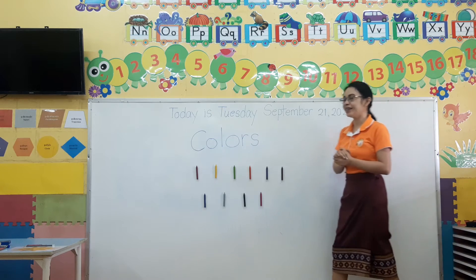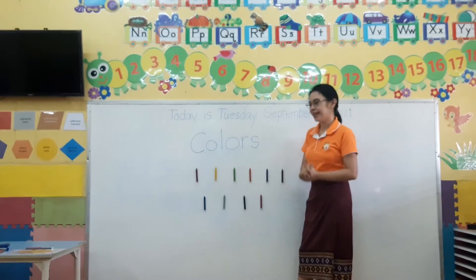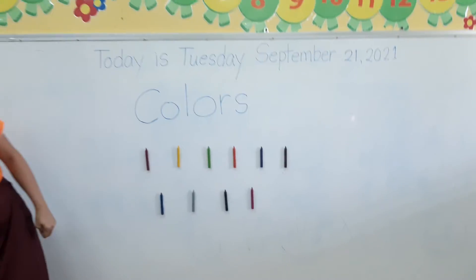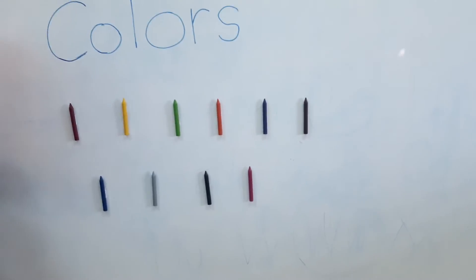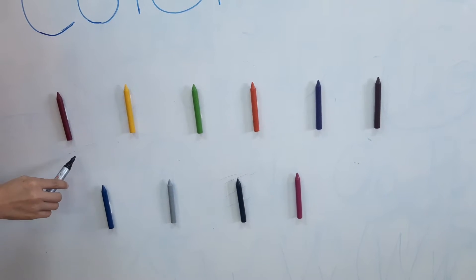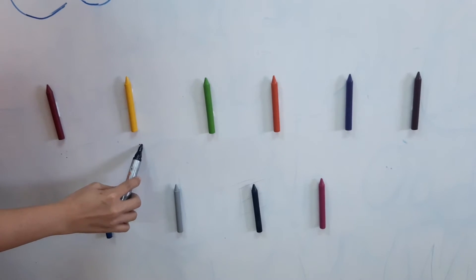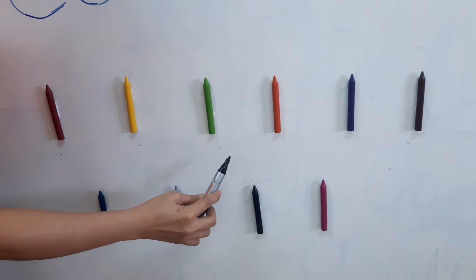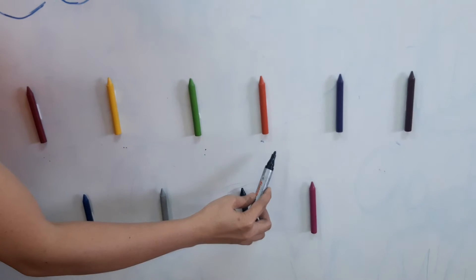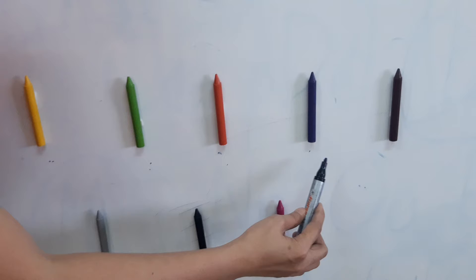And let's continue learning about colors. Yes? Okay, can you see the colors here? I'll say it with me. What color is this? Red. Again, red. Yellow. Yellow. Green. Green. Orange. Orange. Purple. Violet.